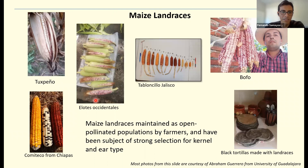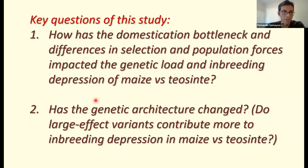Maize land races have been maintained as open-pollinated populations by farmers and have been subject to strong selection for kernel and ear types. That is evident when we see all the different land races — all the colors and shapes across Mexico and Central America. The main study questions are: how has domestication and differences in selection and population forces impacted the genetic load and inbreeding depression in maize versus teosinte? And how does the genetic architecture change — do large-effect variants contribute more to inbreeding depression in maize versus teosinte?